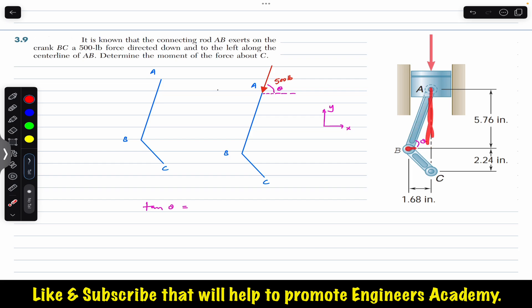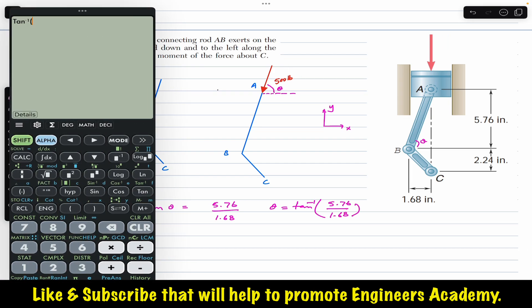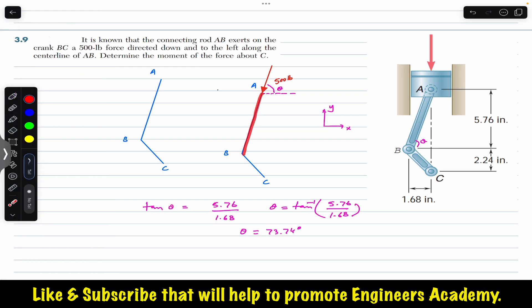Tan theta equals the perpendicular divided by the base, which is 5.76 divided by 1.68. So theta equals tan-inverse of 5.76 divided by 1.68, giving us theta equal to 73.74 degrees. This means AB makes an angle of 73.74 degrees with the horizontal, and the 500-pound force F makes that same angle theta with the horizontal since it acts along centerline AB. Now we can resolve the 500-pound force into its components.